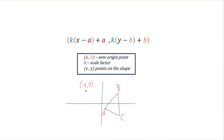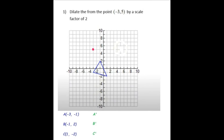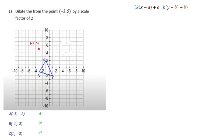Let's look at an example using the dilation formula. This problem says dilate from the point negative 3 comma 5 by a scale factor of 2. It gives the three positions of the triangle, A, B, and C. The x coordinate formula is before the comma and the y coordinate formula is after the comma, and we're going to apply this for each of the points in our triangle.